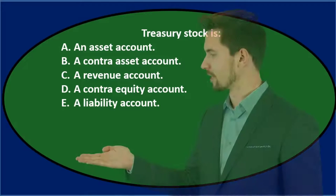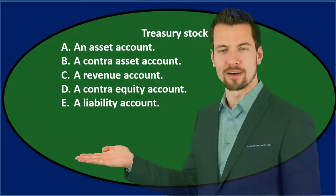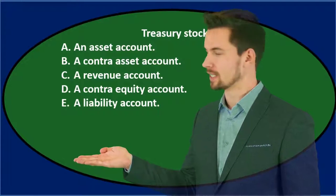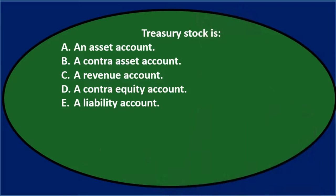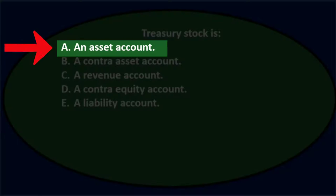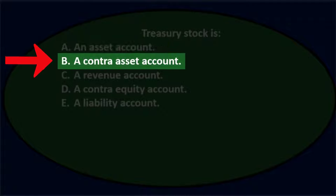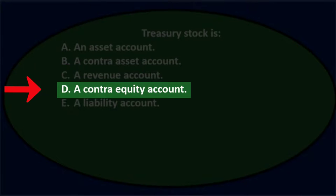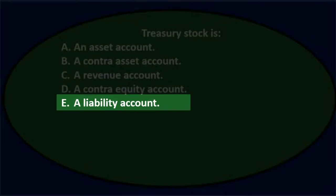In this presentation we will take a look at multiple choice questions related to corporations. First question: Treasury stock is — A, an asset account; B, a contra asset account; C, a revenue account; D, a contra equity account; or E, a liability account.